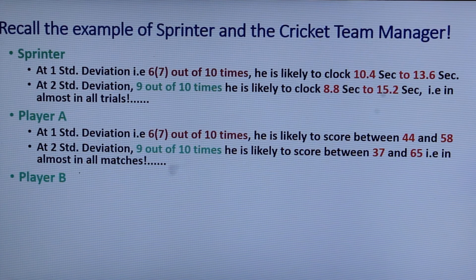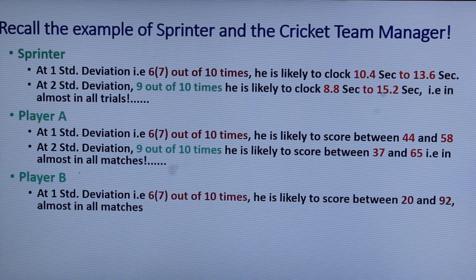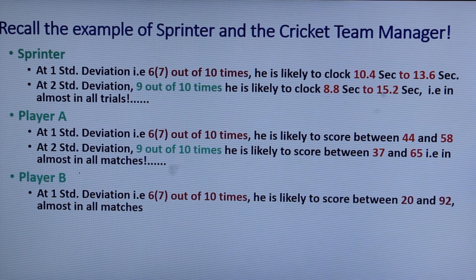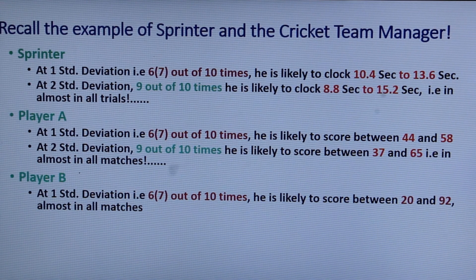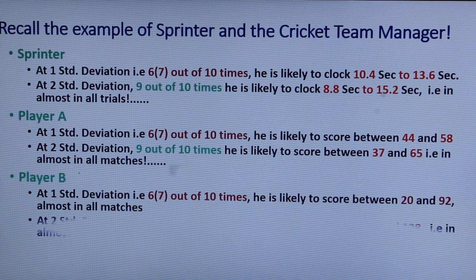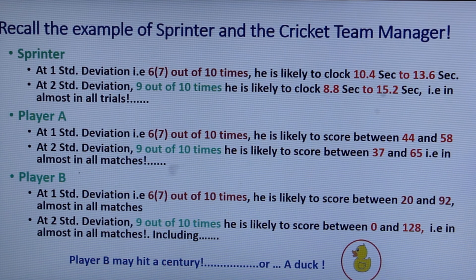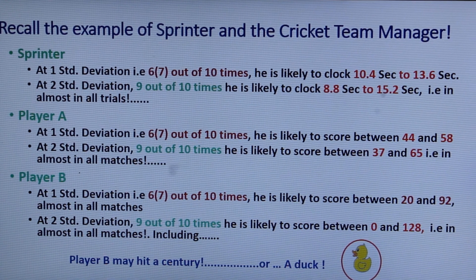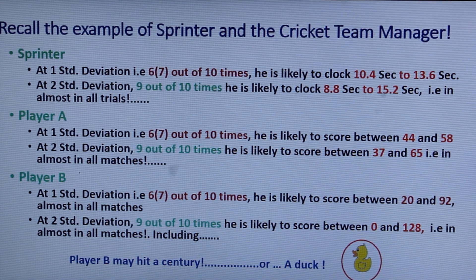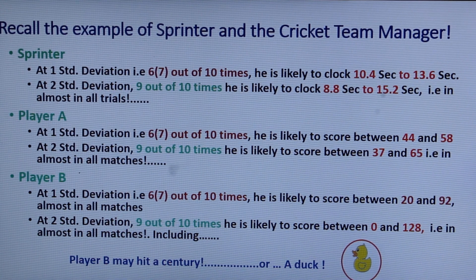On the contrary if you take player B with one standard deviation that means out of 10 times seven times he is likely to score anywhere between 20 to 92 runs. And 9 out of 10 times is likely to score anywhere between 0 to 128 runs. Yes he will score a century or he may score a century but that doesn't prevent him from scoring a duck too.